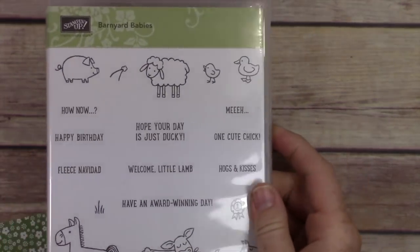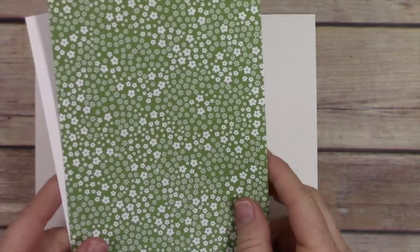We're using the Barnyard Babies stamp set to create this card. I wanted to make a five by seven card because I needed it to be bigger than normal, so my base is cut at ten inches by seven inches and scored at five inches to make a five by seven.